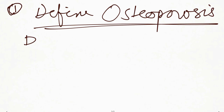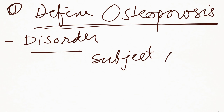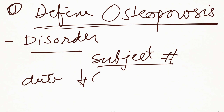First of all, it's a disorder — and we should start in the right way. It's a disorder in which the bone becomes increasingly porous and brittle and subject to fracture. This is due to loss of calcium and other minerals.